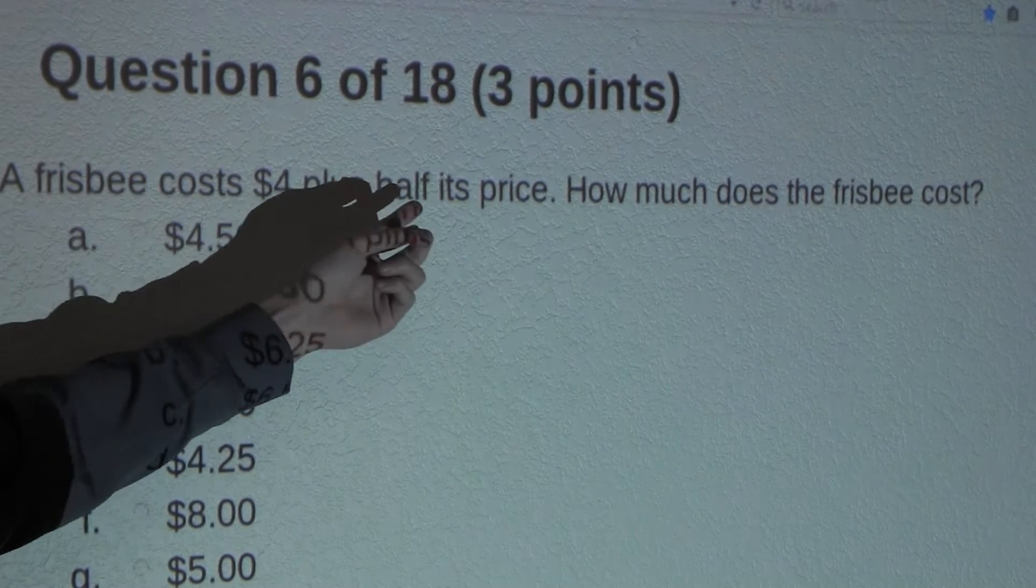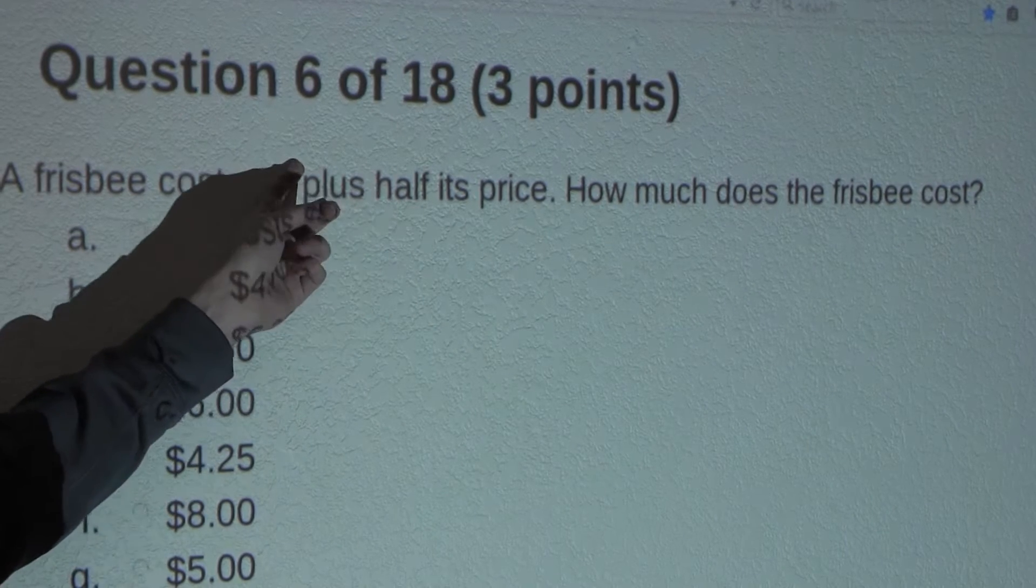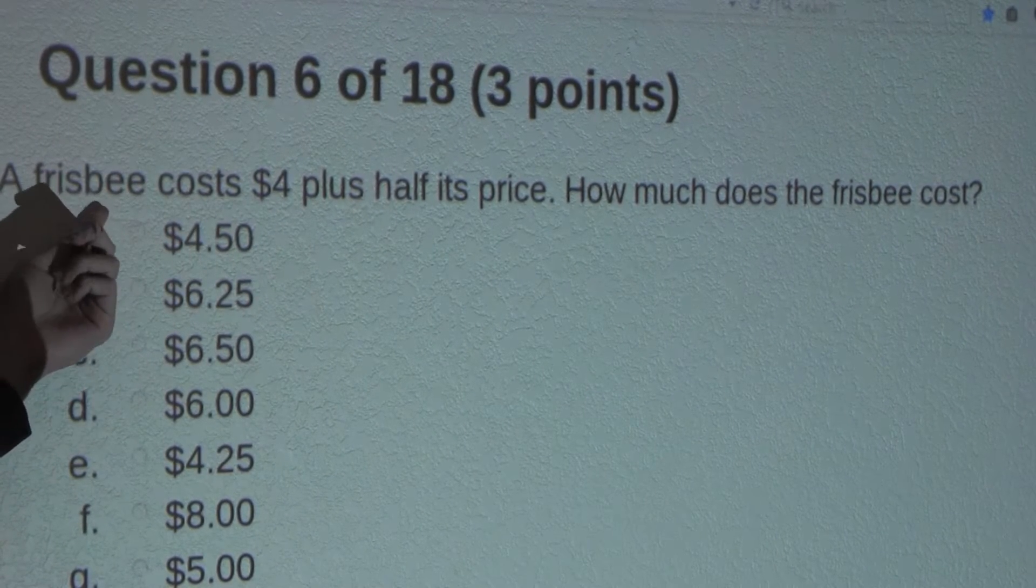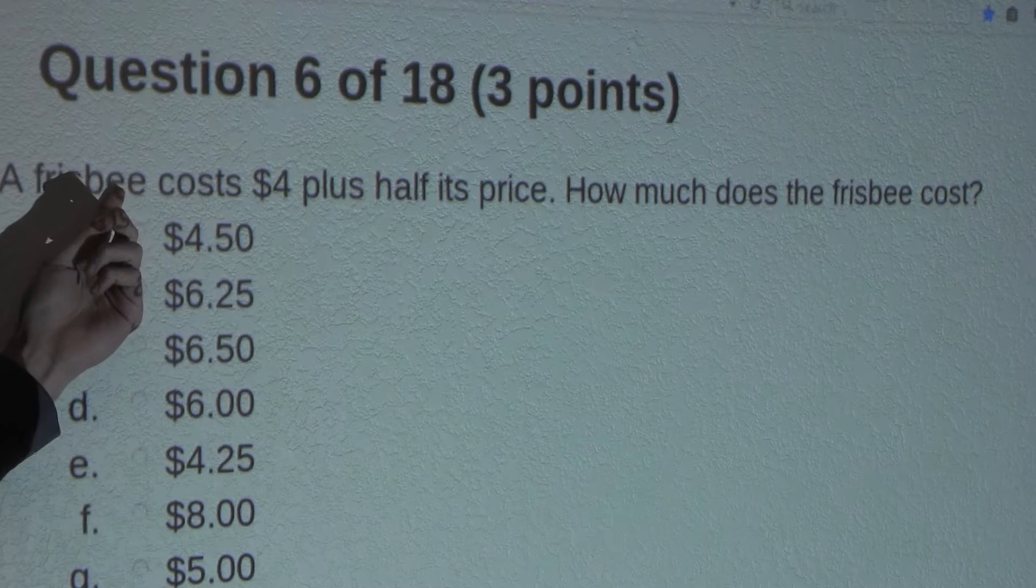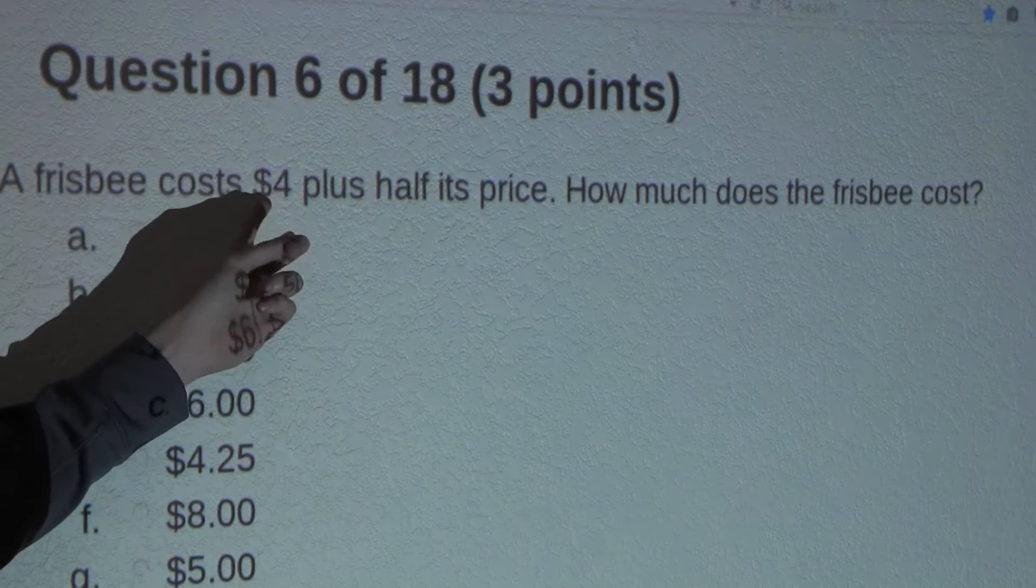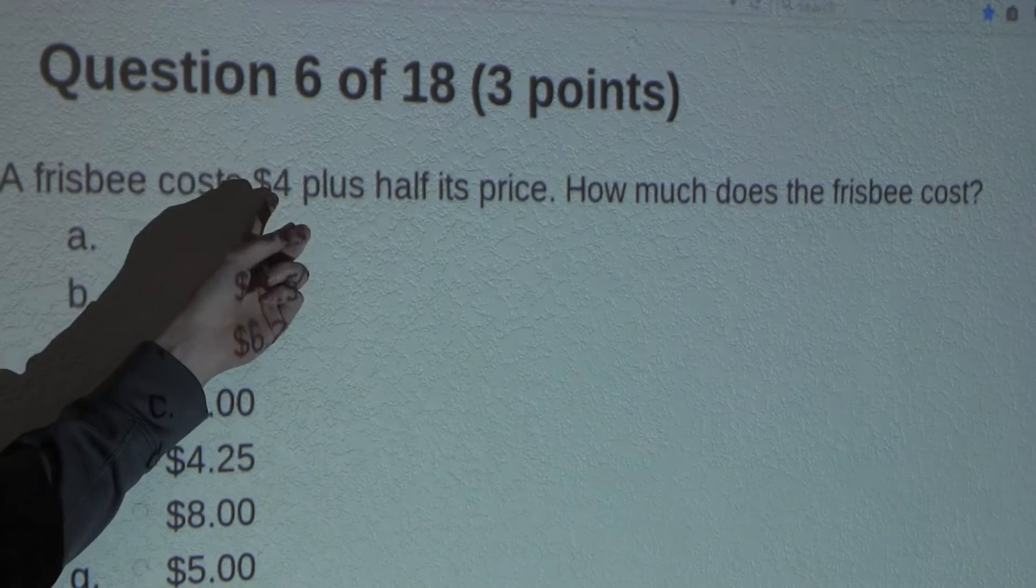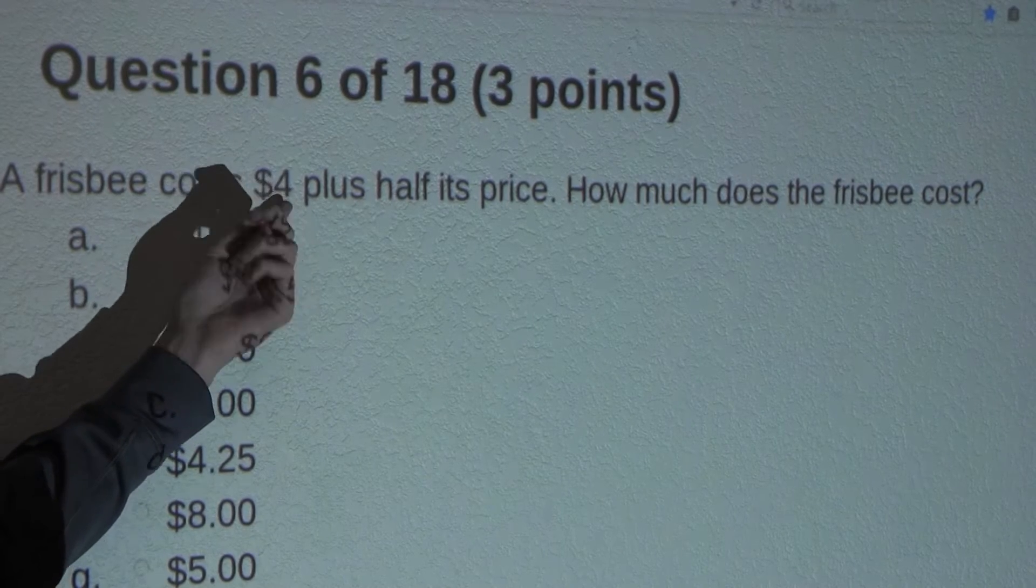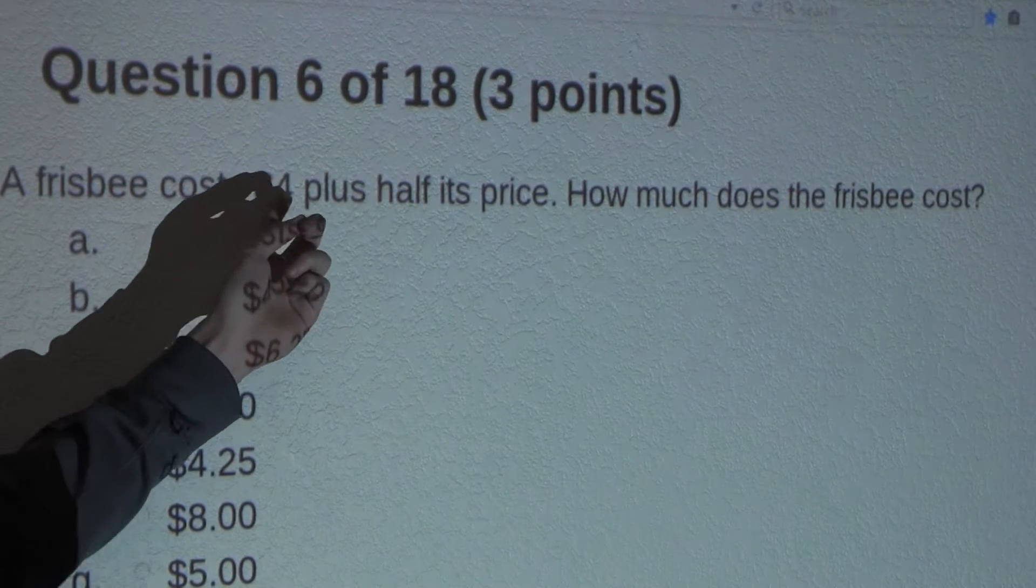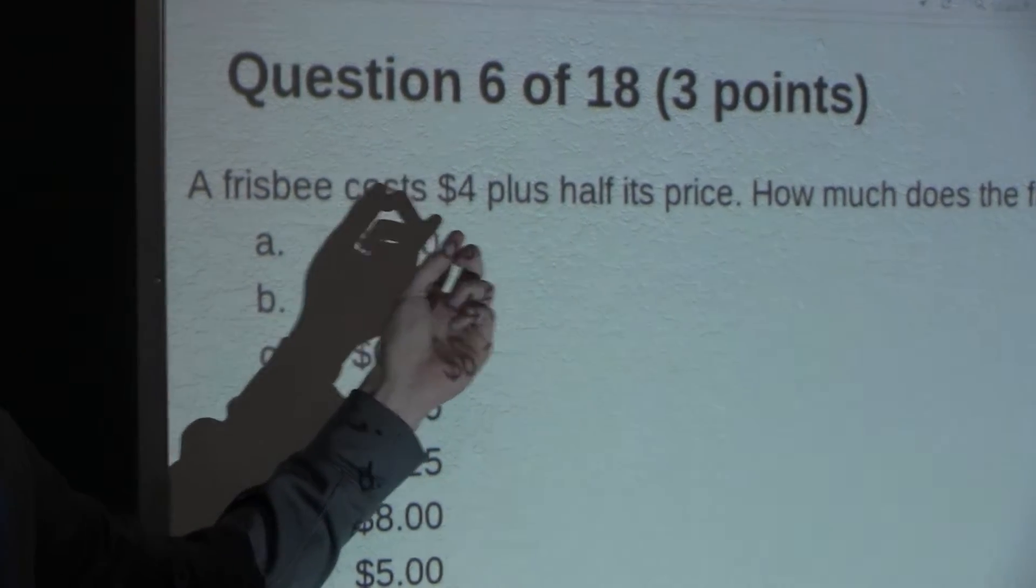But we also know that half its price plus half its price would also be the full price of the frisbee. And therefore, we know that this $4 must be half the price of the frisbee. And if we know that $4 is half the price of the frisbee, we can double that to find the full price of the frisbee.